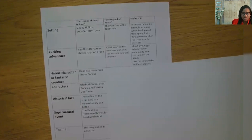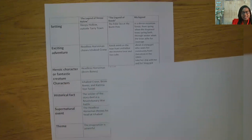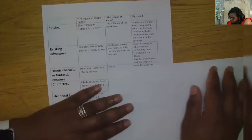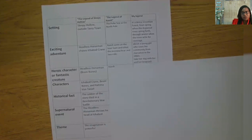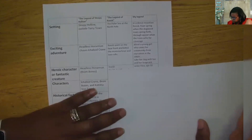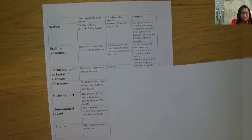Deciding on the exciting adventure leads us to think more about the heroic character or fantastic creature. In The Legend of Sleepy Hollow, the Headless Horseman was a fantastic creature. What would you say about The Legend of Quiche in this category? That's pretty easy — it was Quiche. Now, decision time. Who is your heroic character or fantastic creature? I think I've already shared mine, but I'm going to give her a name. I think I will call her Eliza. And I want to include that she's 10. Now let's go back to our text and take some clues from the author on some words he used to describe Quiche. This might help us to develop our heroic character.